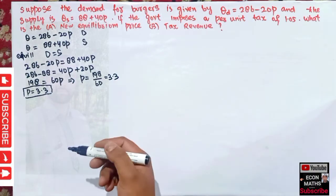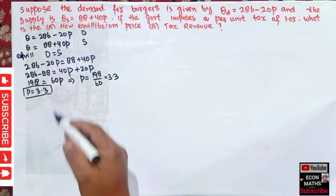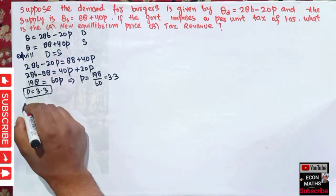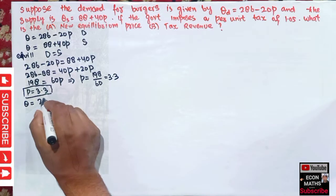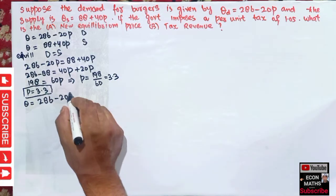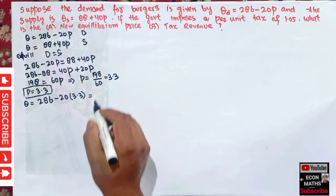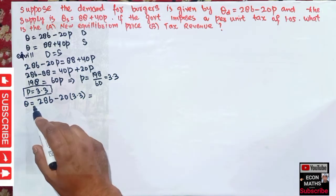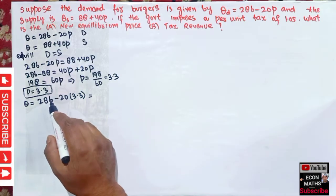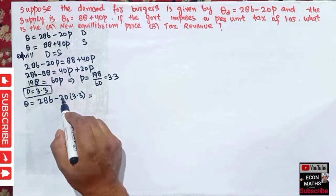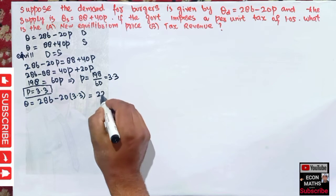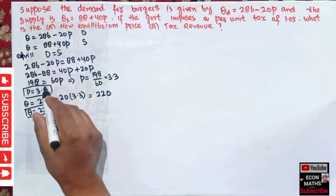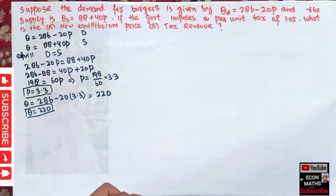Now we find the quantity demanded at this price. We insert P = 3.3 into the demand function: Q = 286 − 20 × 3.3, which comes out to be 220. So our old equilibrium price is P = 3.3 and old equilibrium quantity is Q = 220.